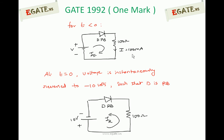Now the polarity implies the minus terminal is connecting towards the positive P-side of the diode, so the diode is now reverse biased. The current flows from N to P — this is the current flowing through the diode at T equal to 0.